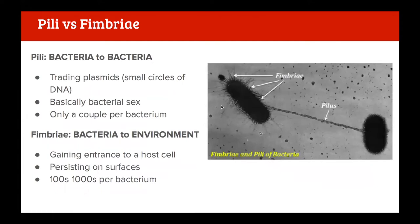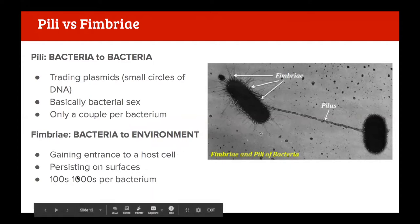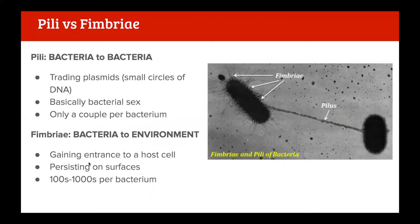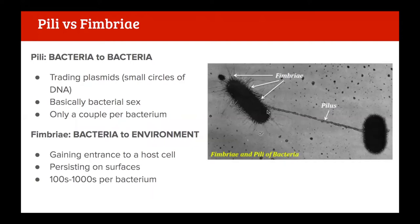Looking at pili and fimbriae in more detail: fimbriae are little hair-like projections designed to stick to other bacteria or external surfaces - whether animate or inanimate - enabling them to persist for a long time. There are lots of fimbriae per bacterium. Pili, of which there are only a couple, are longer and thicker and are essentially as close as bacteria get to a sex organ - they're designed to transmit plasmids between bacteria. If one bacterium has an antibiotic-resistant plasmid, it can transmit that down to another bacterium via pili, allowing them to evolve much faster through this quasi-sexual reproduction mechanism.